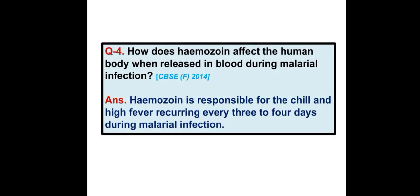How does hemozoin affect the human body when released in blood during malarial infection? Hemozoin is responsible for the chills and high fever recurring every 3 to 4 days during malarial infection.